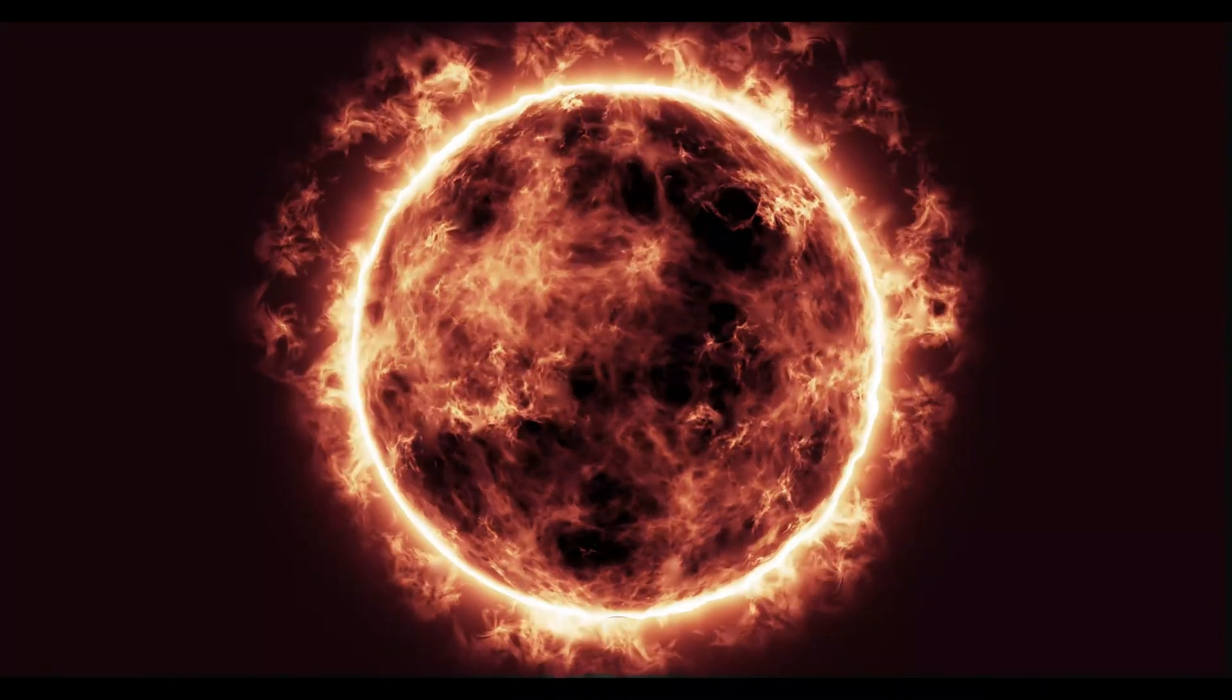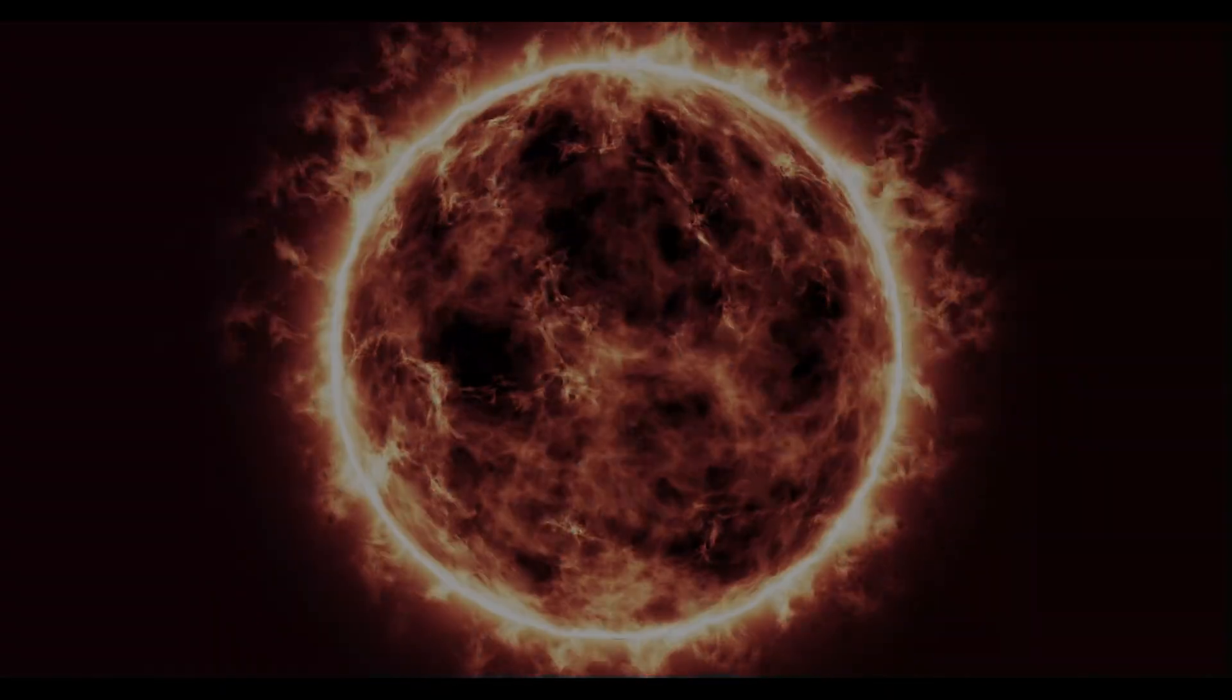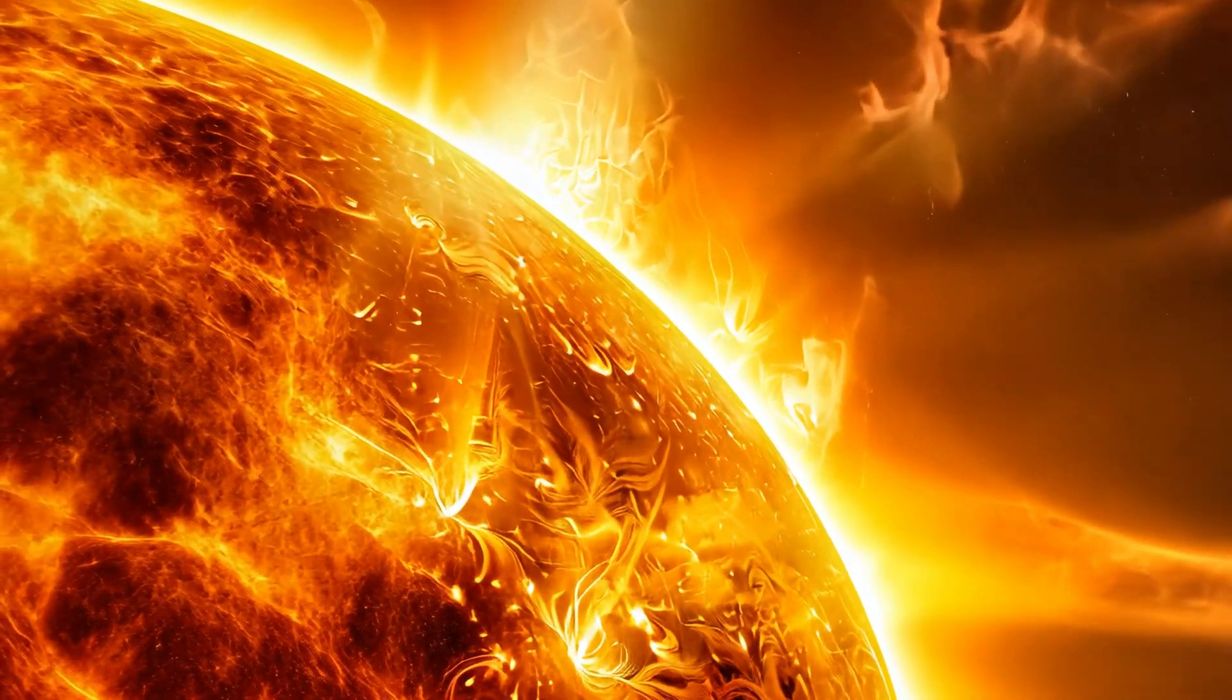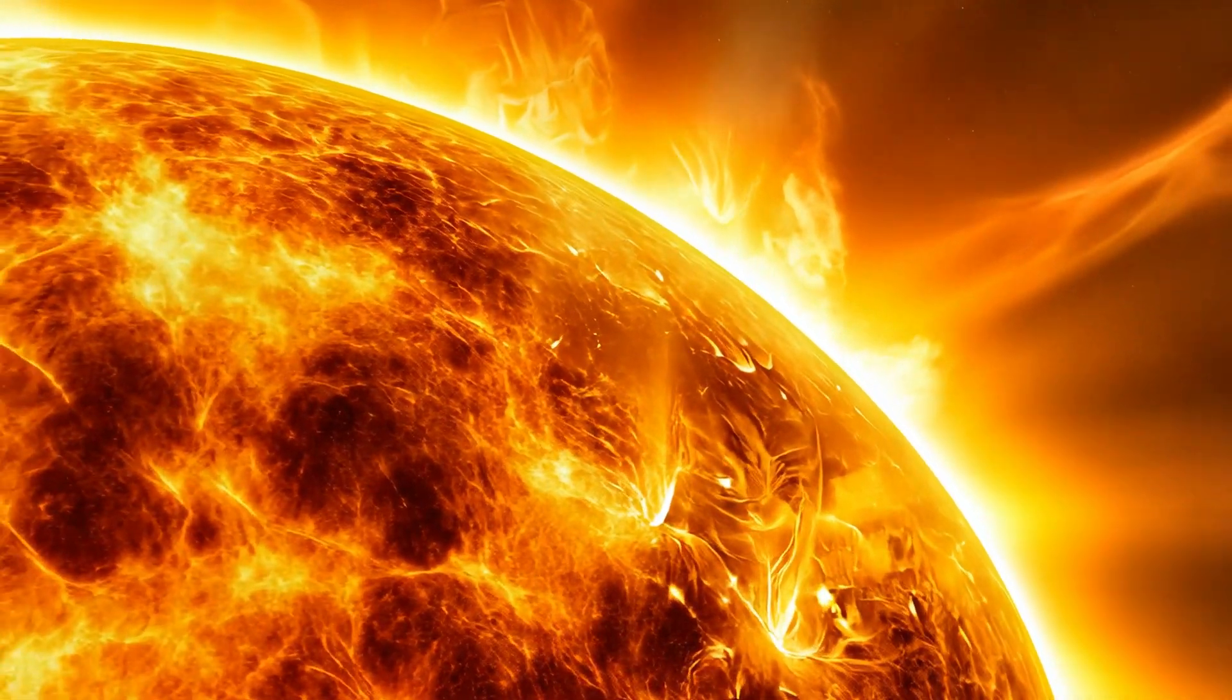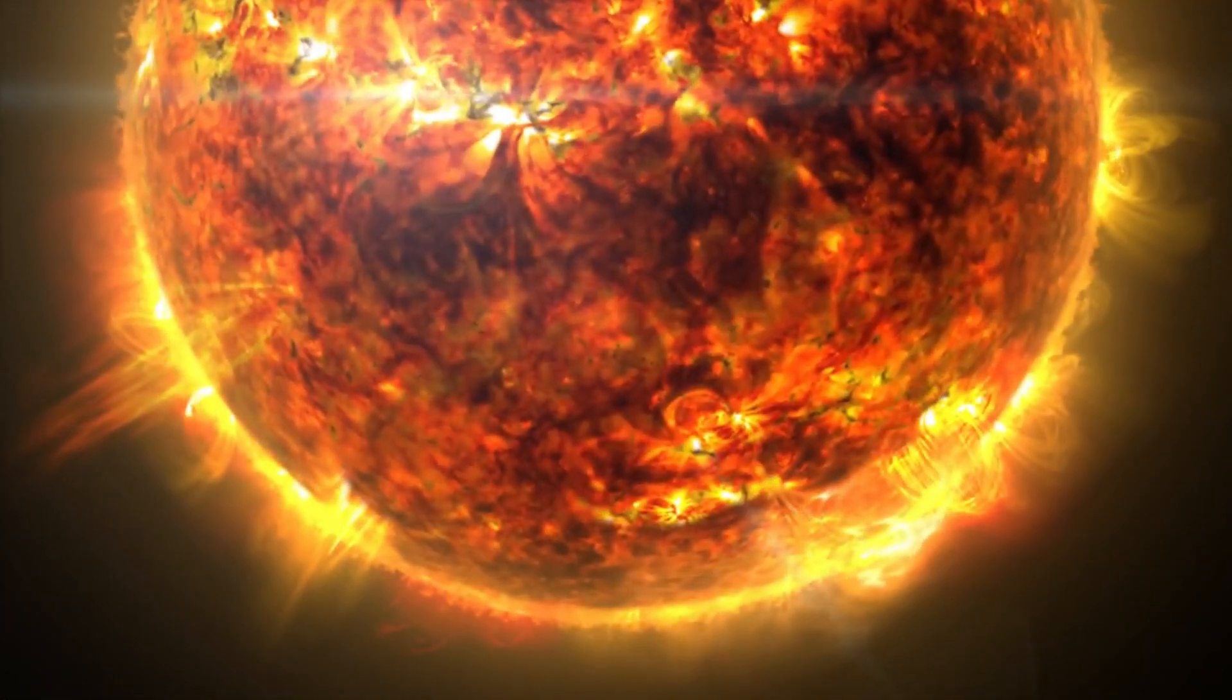However, the sun didn't settle down after this first intense wave of solar storms. Instead, it continued to unleash bursts of M and mild X-class flares, keeping space weather experts on high alert. On October 3, 2024, a massive X9.0 flare erupted right from the center of the sun's disk, the strongest flare seen in seven years.